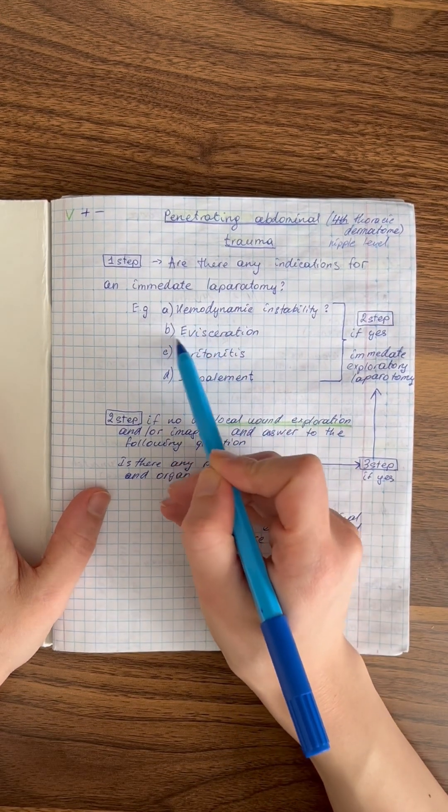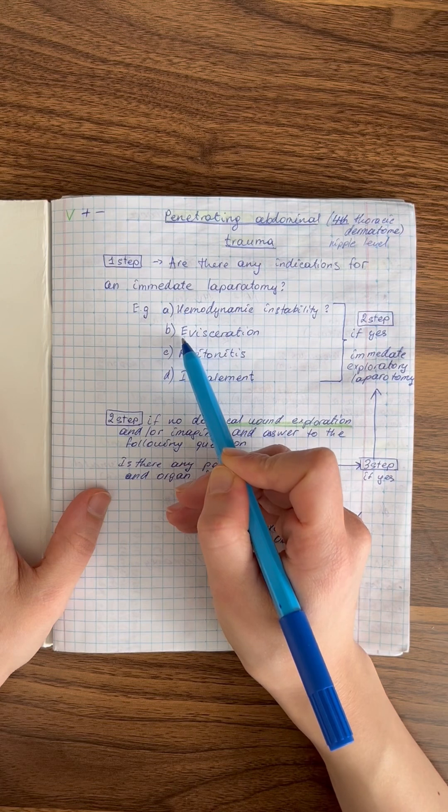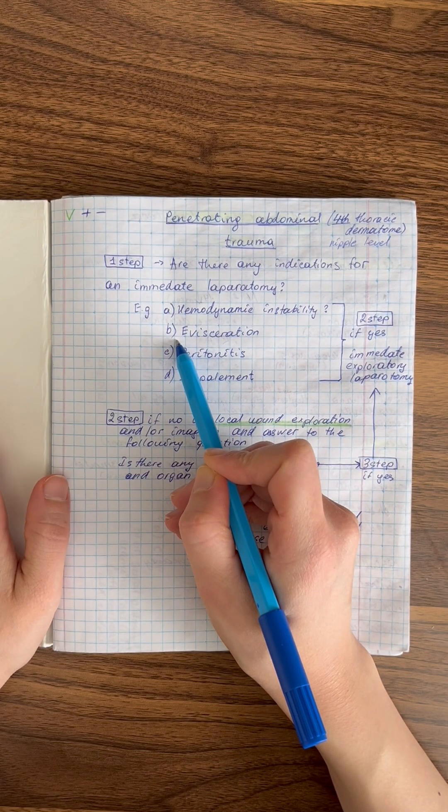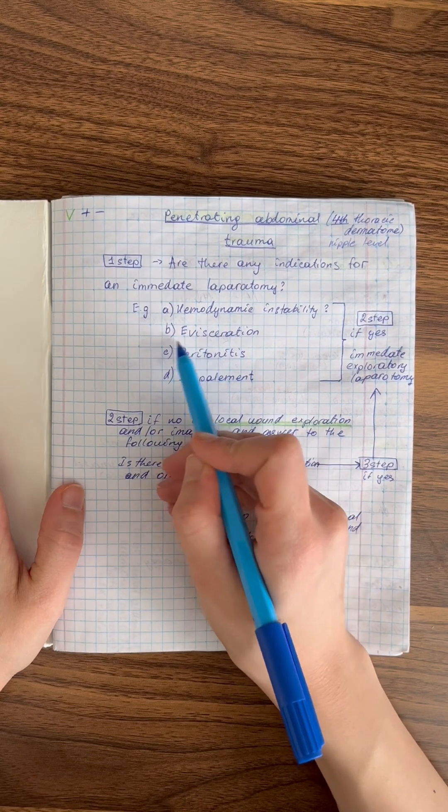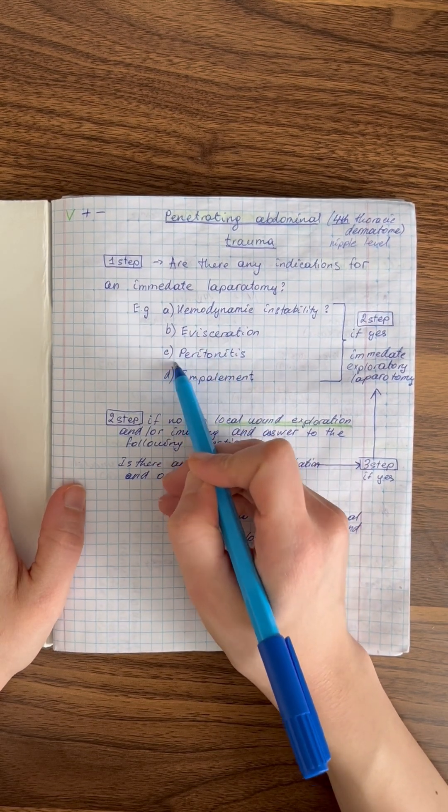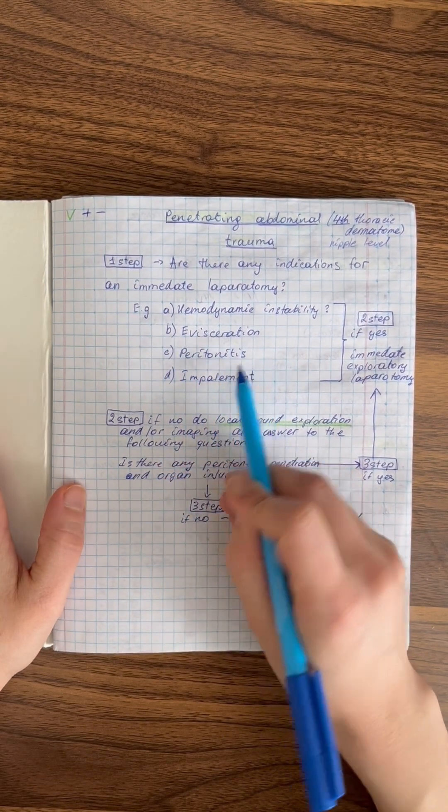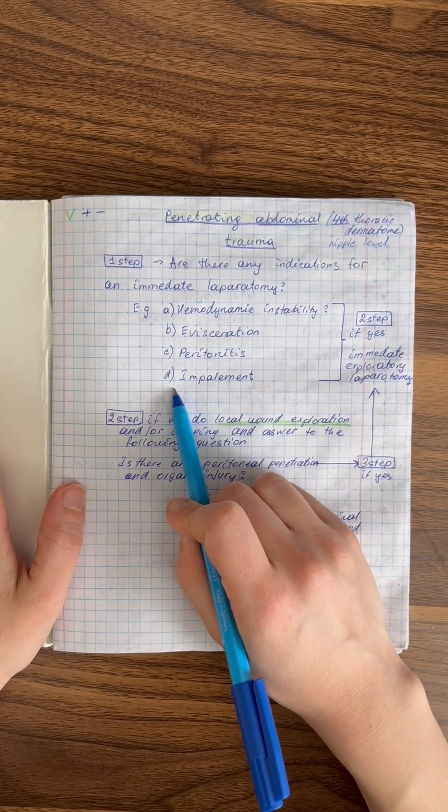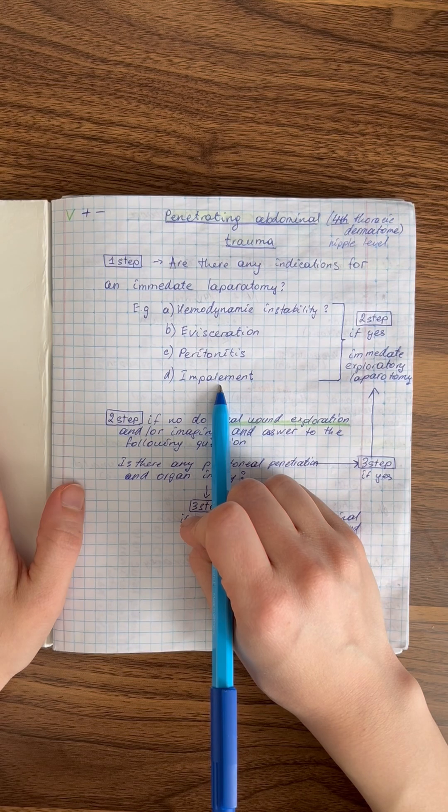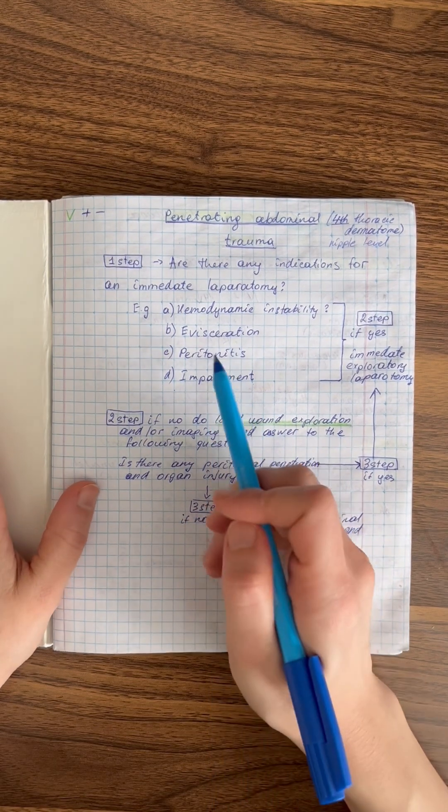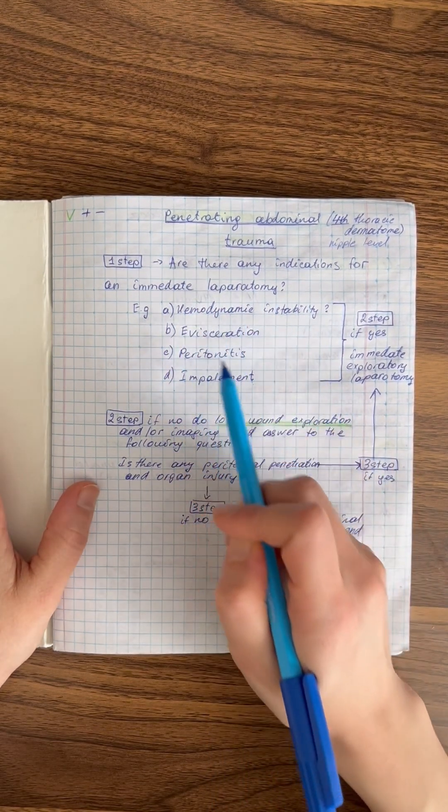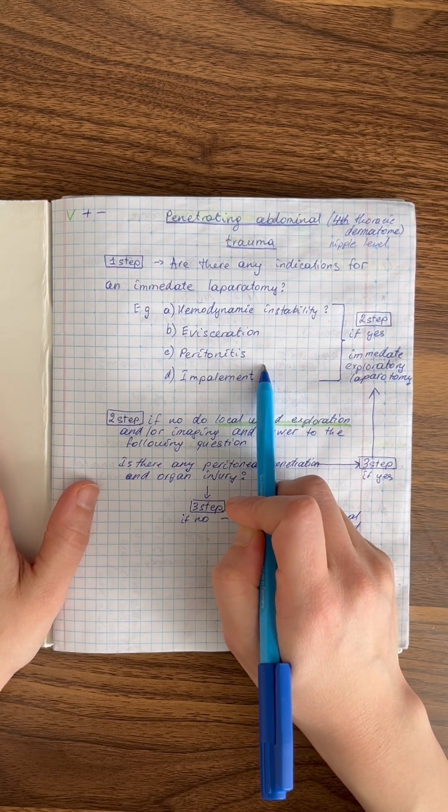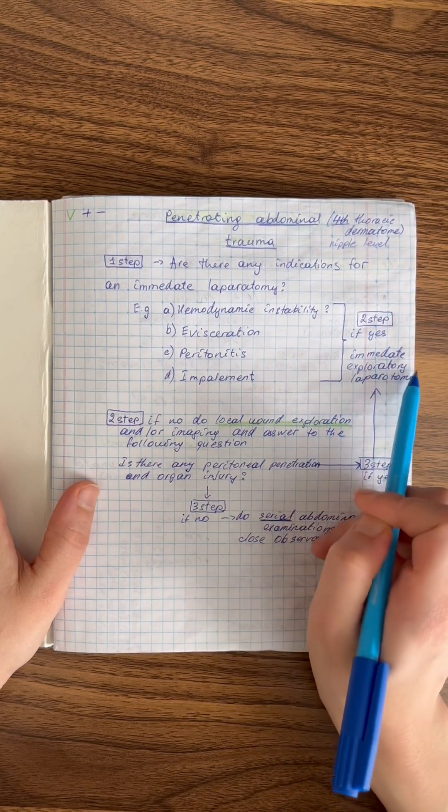Next, the injury presents with evisceration, which refers to the removal or expulsion of organs or tissues from a body cavity. Or when there are signs of peritonitis, which is inflammation of the peritoneum. Another indication could be impalement, when a sharp or blunt object penetrates the body and remains embedded. If any of these points are present, these are very serious conditions and we proceed with an immediate exploratory laparotomy.